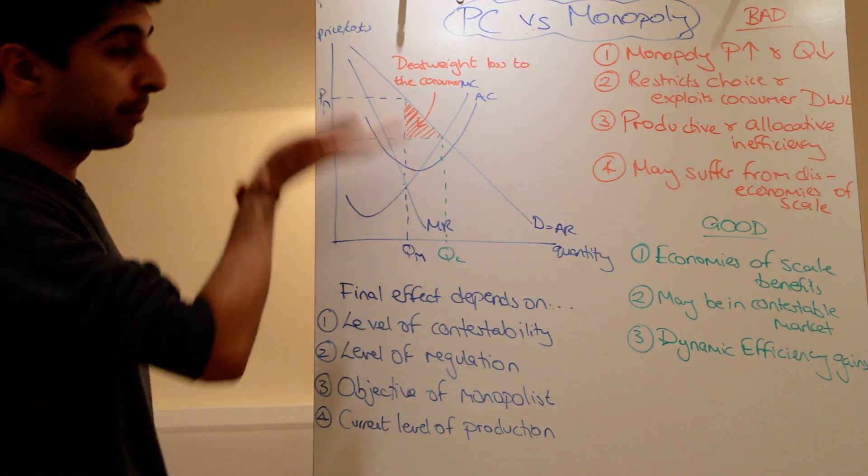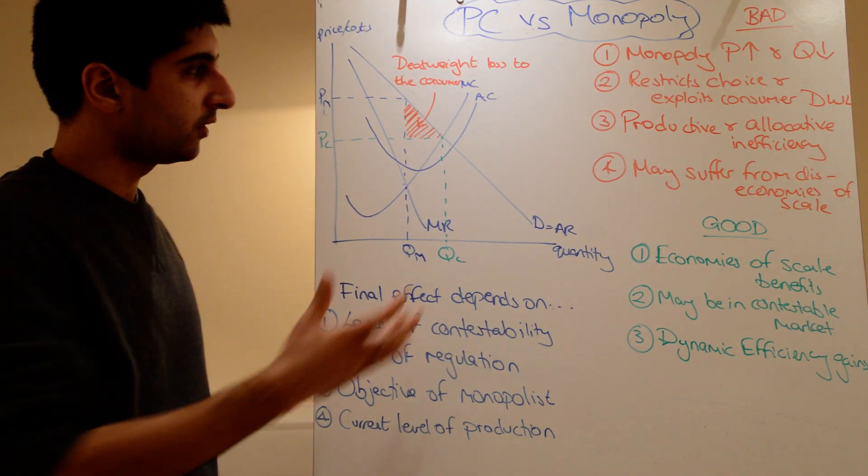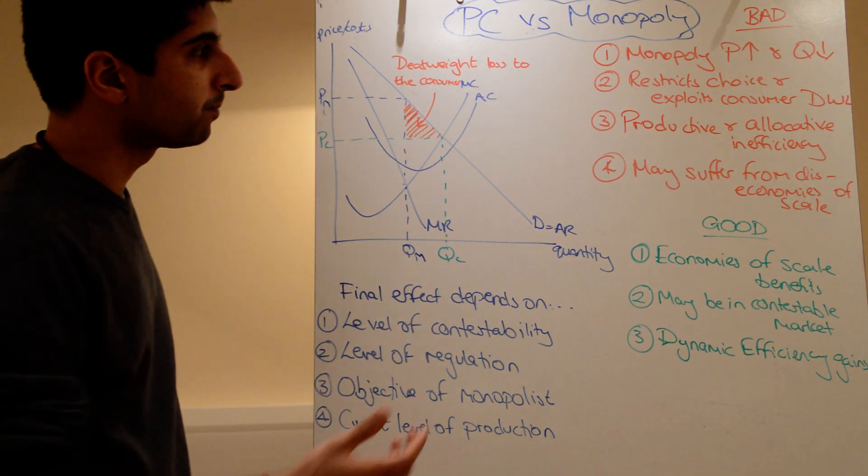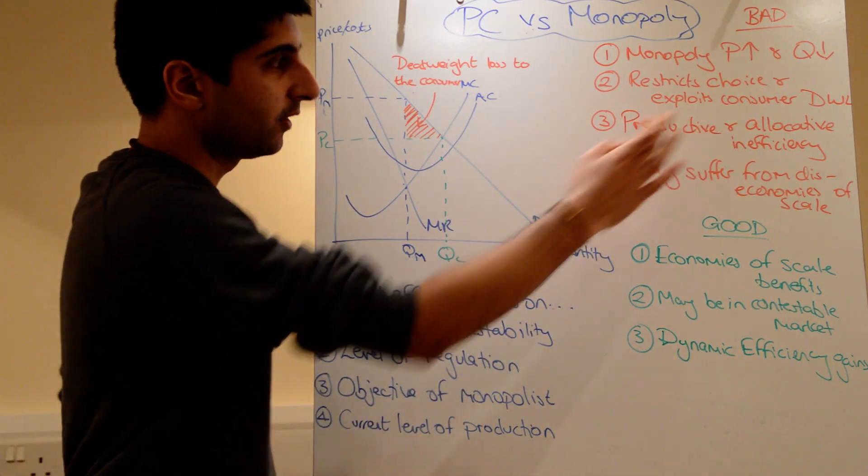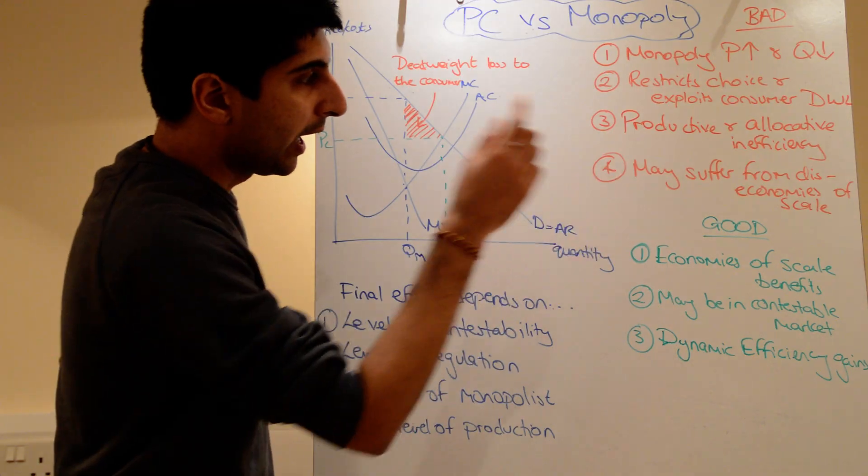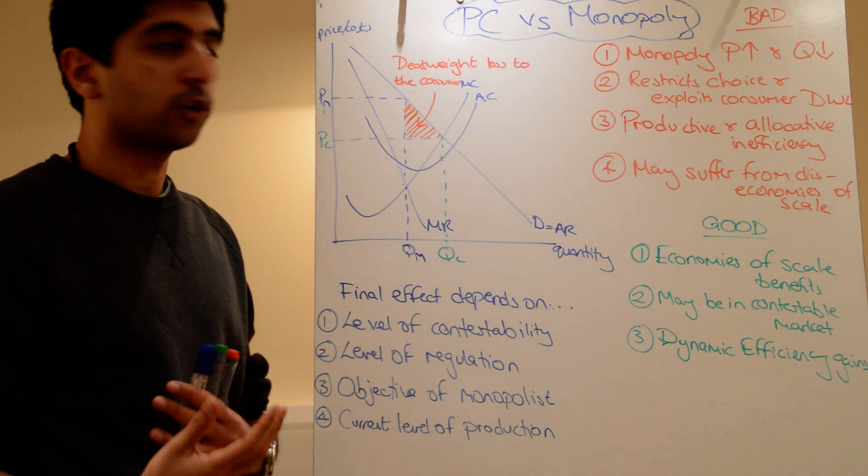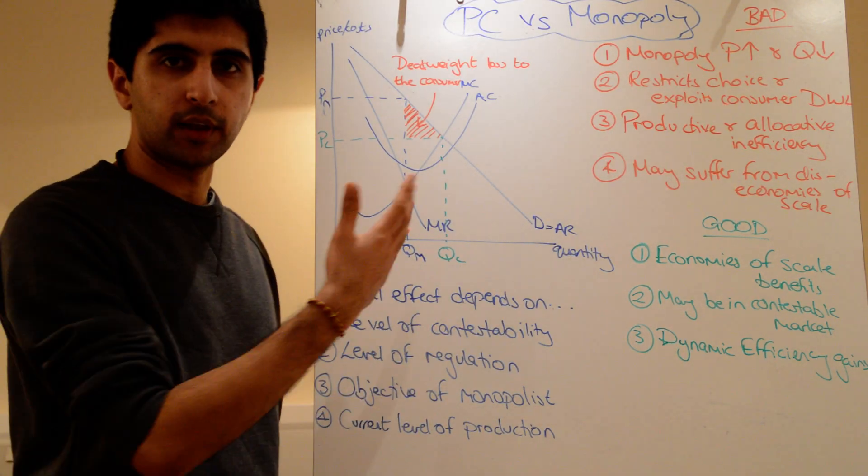And we've said that because prices are increased, there's exploitation, there's a deadweight loss to consumers. We know there's productive and allocative inefficiency. Well, that's not good. Okay? There's inefficiency there. And the monopoly also may suffer from diseconomies of scale depending on where it's producing on the average cost curve.